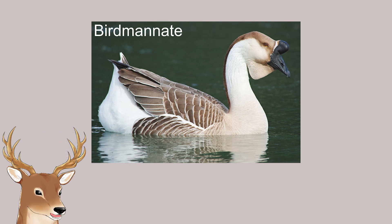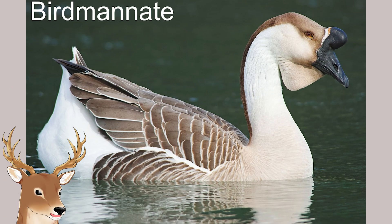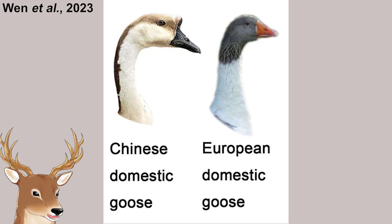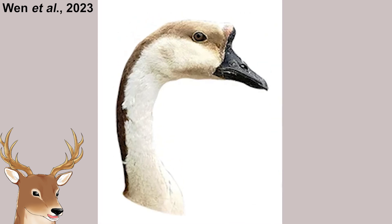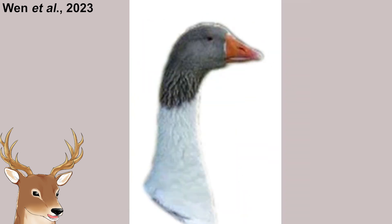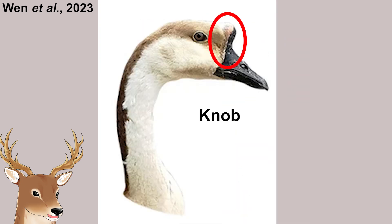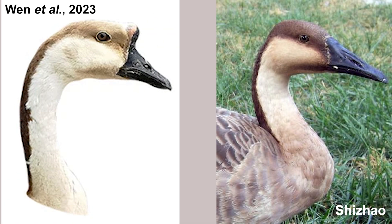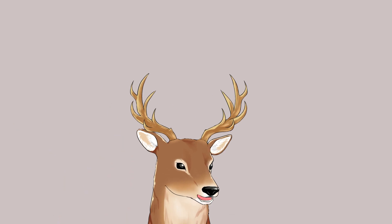There is actually a simple way to differentiate the two groups of domestic goose. The Chinese goose has a lump at the base of their beak, while the European goose doesn't. This lump is called a knob. Interestingly, this knob is only found in the domesticated ones — the wild ones don't have this knob. So what's with the knob? What's its purpose?